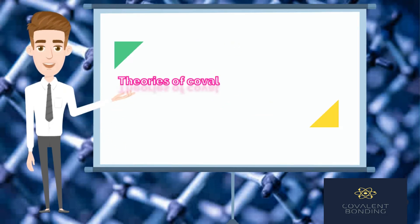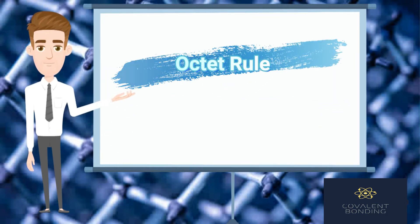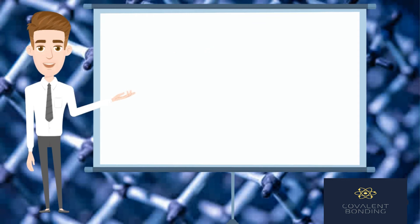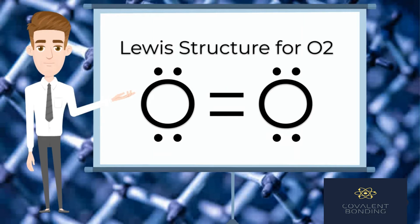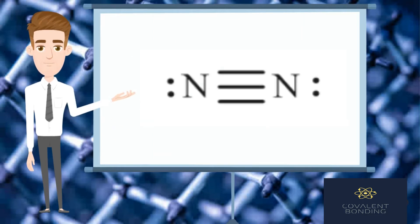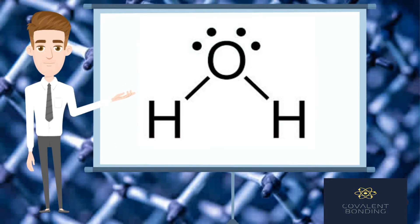Theories of covalent bond formation include the octet rule, which states that atoms of elements have a tendency to attain the nearest inert gas configuration either by transfer of electrons or by sharing of electrons. Some examples of covalent molecules demonstrated with their Lewis dot structures include hydrogen, oxygen, nitrogen, chlorine, water, and methane.